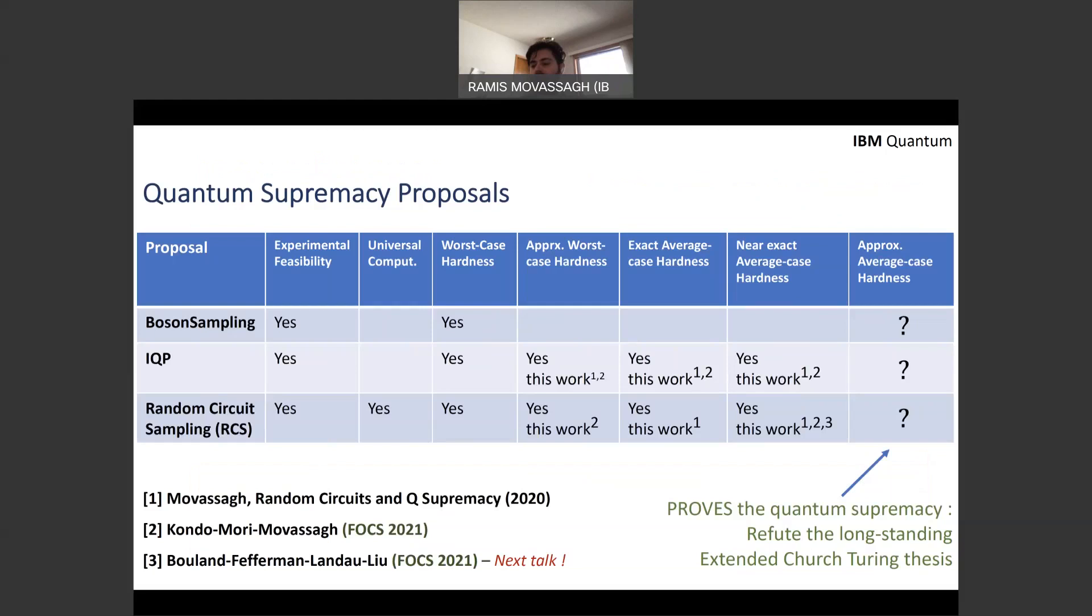So let me summarize the status of quantum supremacy so far. What we have for our tasks is that they're both on sampling IQP circuits and random circuit sampling. So experimentally, they all can have been done for some finite sizes. Only random circuit sampling is a universal model. The worst case hardness is known for all of them. Approximate worst case hardness, we proved, for example, that 2^{-M^C} for IQP circuits and random circuit sampling. The average case hardness, the exact average case was proved for the random circuit sampling in this work previously and was extended to IQP circuits in this work and the new result that we just heard.